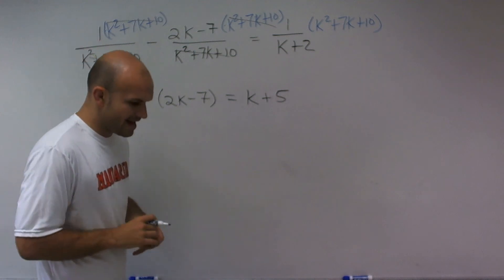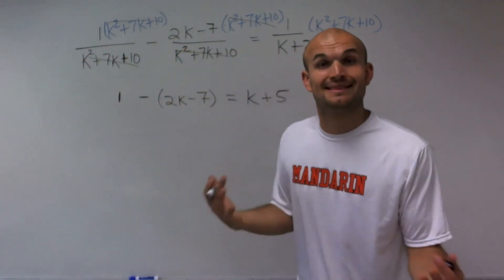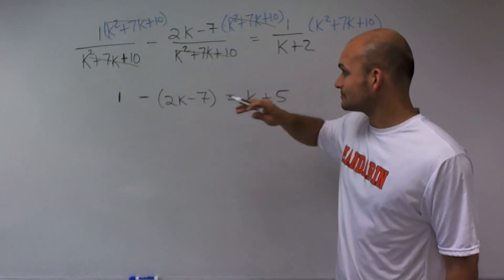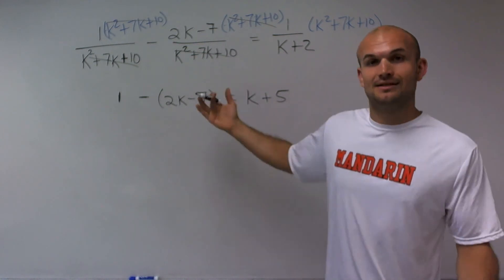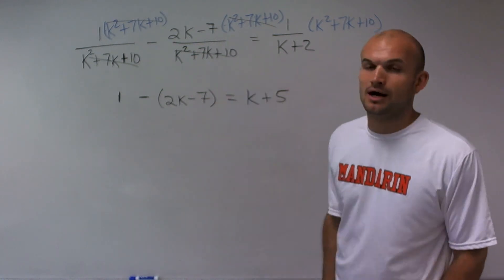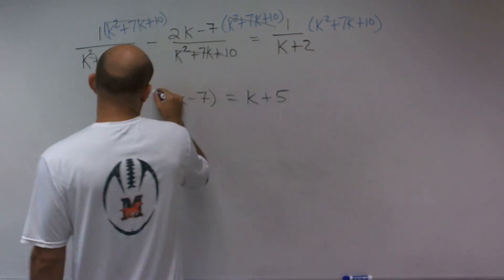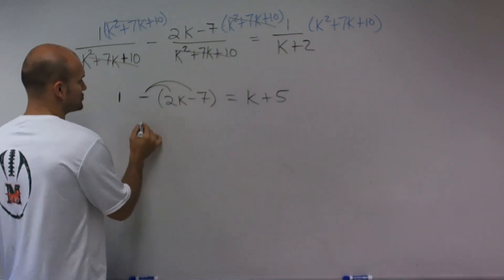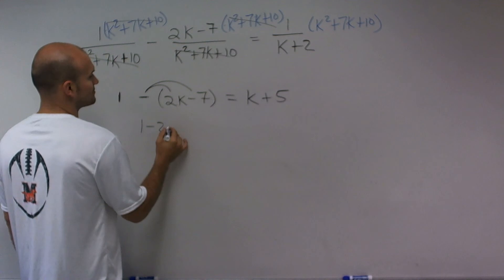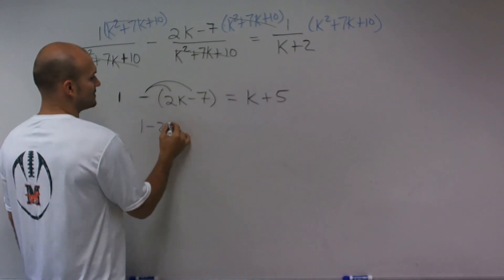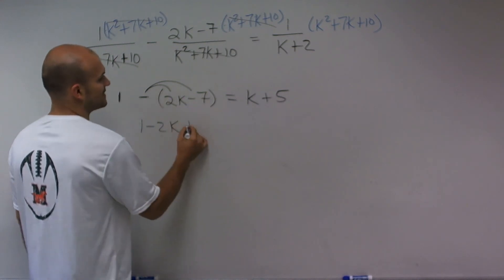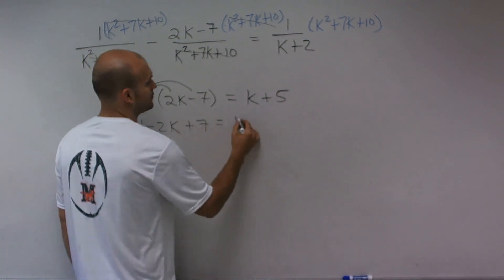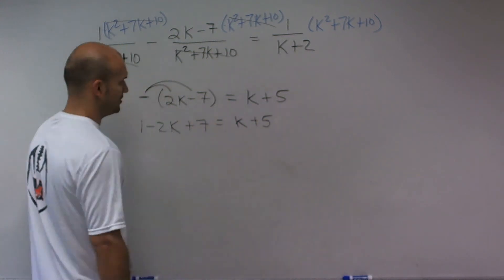All right. So now I have a multi-step equation, and thank God it's linear, right? So what I can use here is now let's just use some steps to isolate my variables. So with this negative 1, I'm going to have to use distributive property. 1 minus 1. Negative 1 times 2k is a negative 2k. Negative 1 times negative 7 is a positive 7. Equals k plus 5.